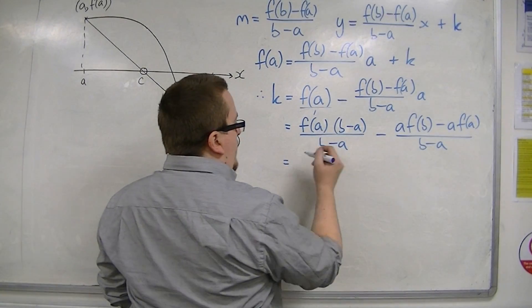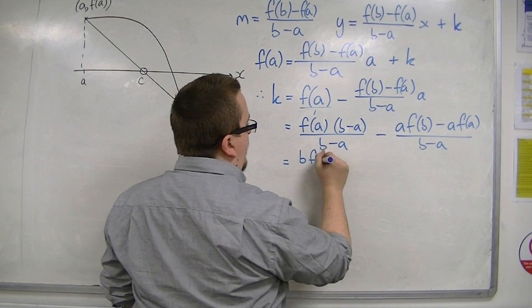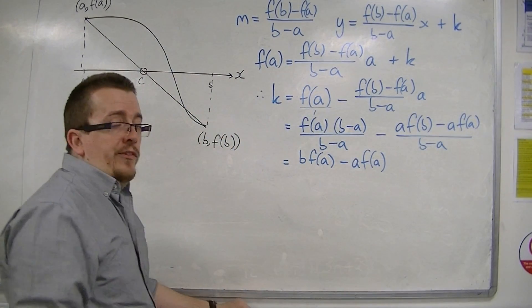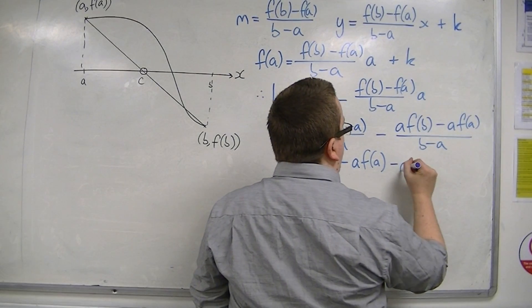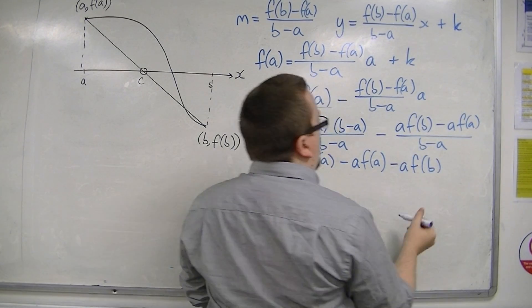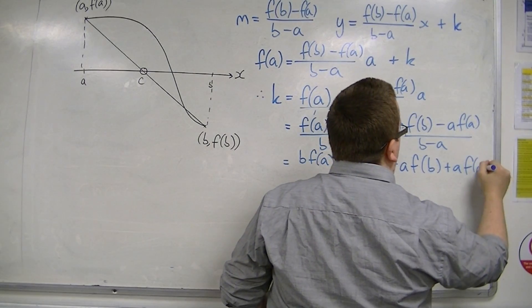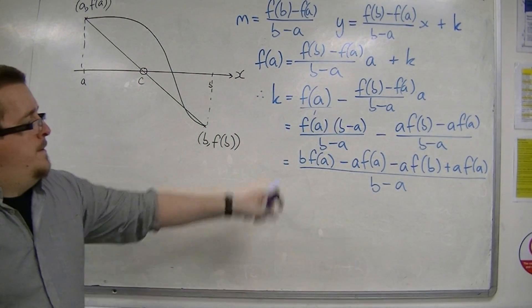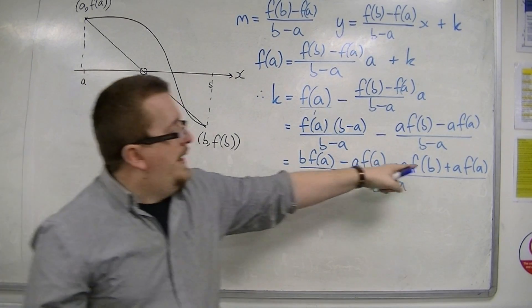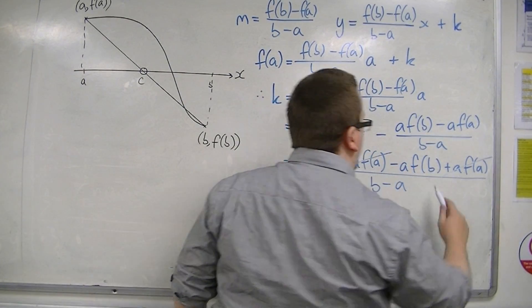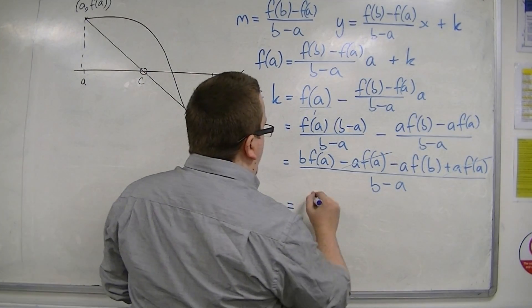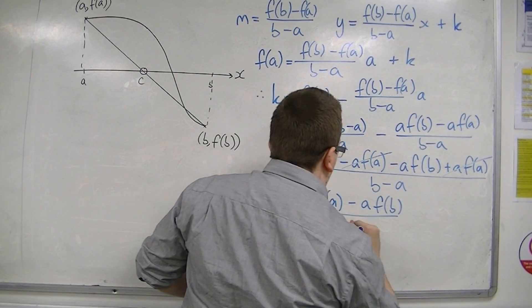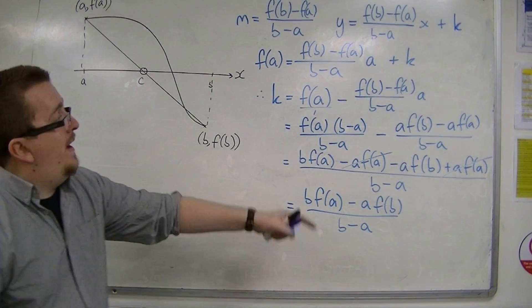Okay, so if I expand this part, I've got b·f(a) minus a·f(a). And, I'm going to combine the two fractions in the same step. So, I'm going to take away a·f(b) plus a·f(a), because I've got a minus and a minus. All over b minus a. Now, what I find is that the minus a·f(a) and the a·f(a) are going to cancel each other out. So, they go. And, I'm going to get left with b·f(a) minus a·f(b), all over b minus a. So, that's my value of k.